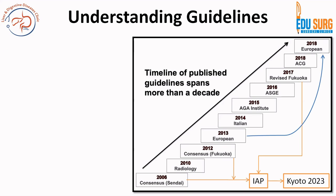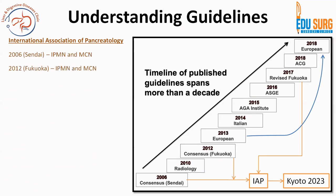The European guidelines are from 2013, revised in 2018. For the International Association of Pancreatology (IAP), the most recent are the Kyoto guidelines. Fukuoka and Sendai included both IPMN and MCN, whereas revised Fukuoka and Kyoto are for IPMN only. So when applying guidelines, you need to understand which cystic lesion the guideline is for.